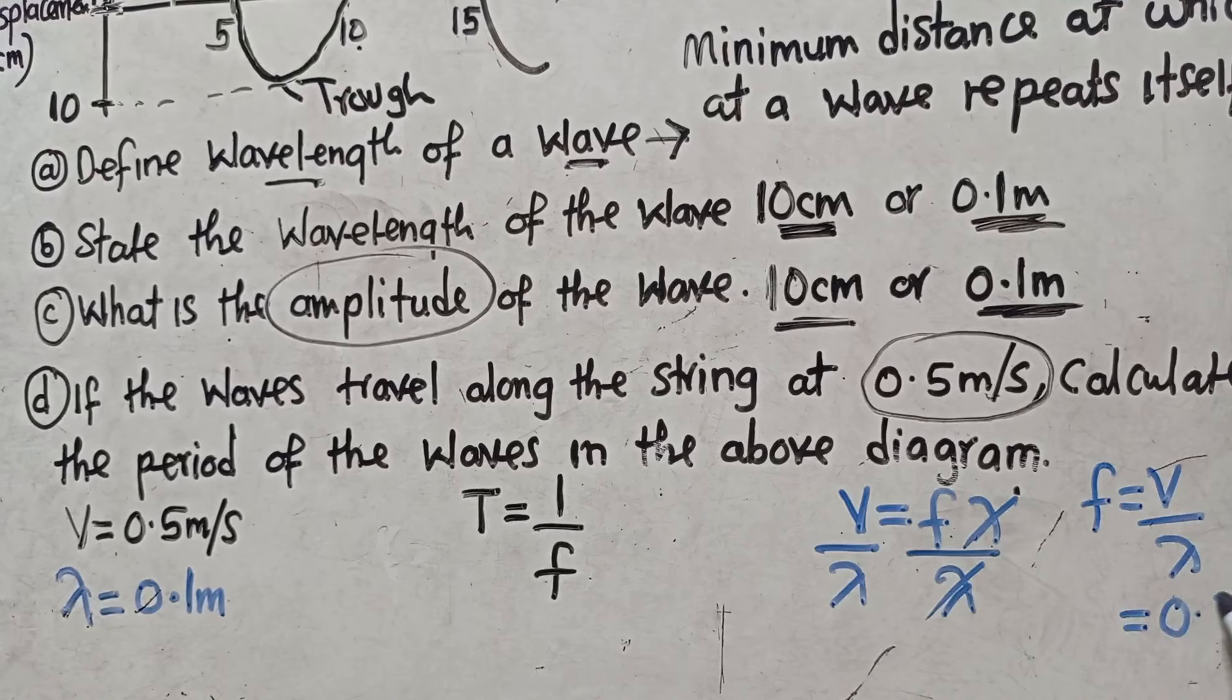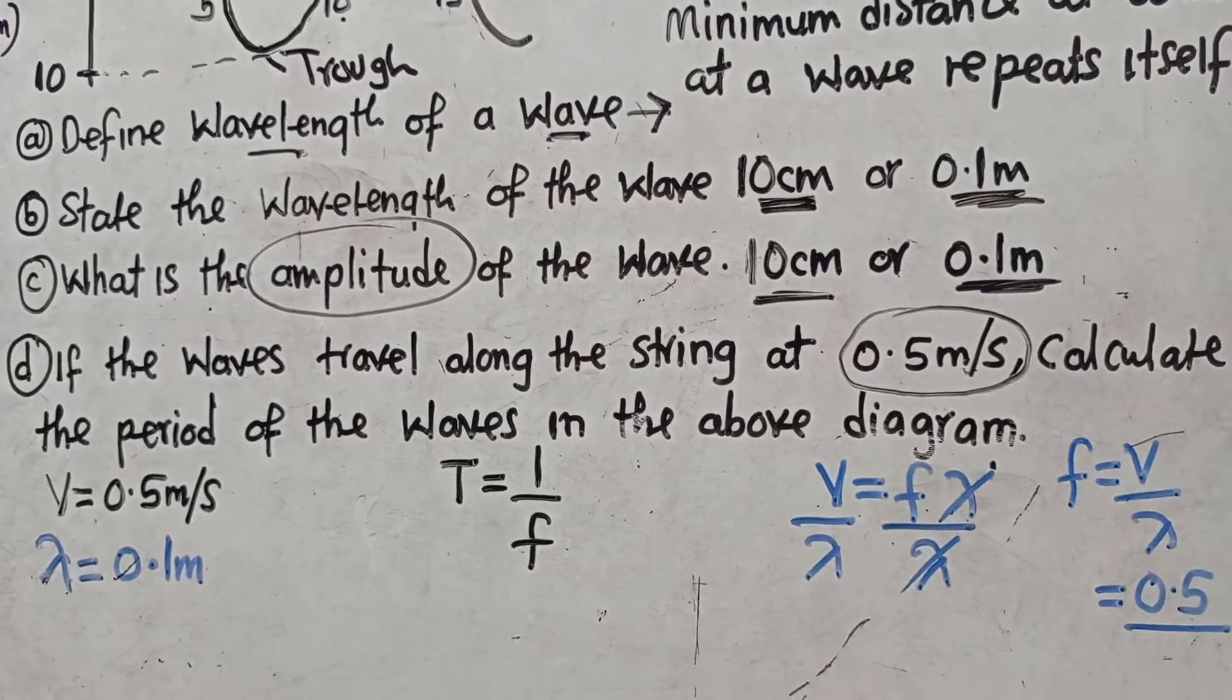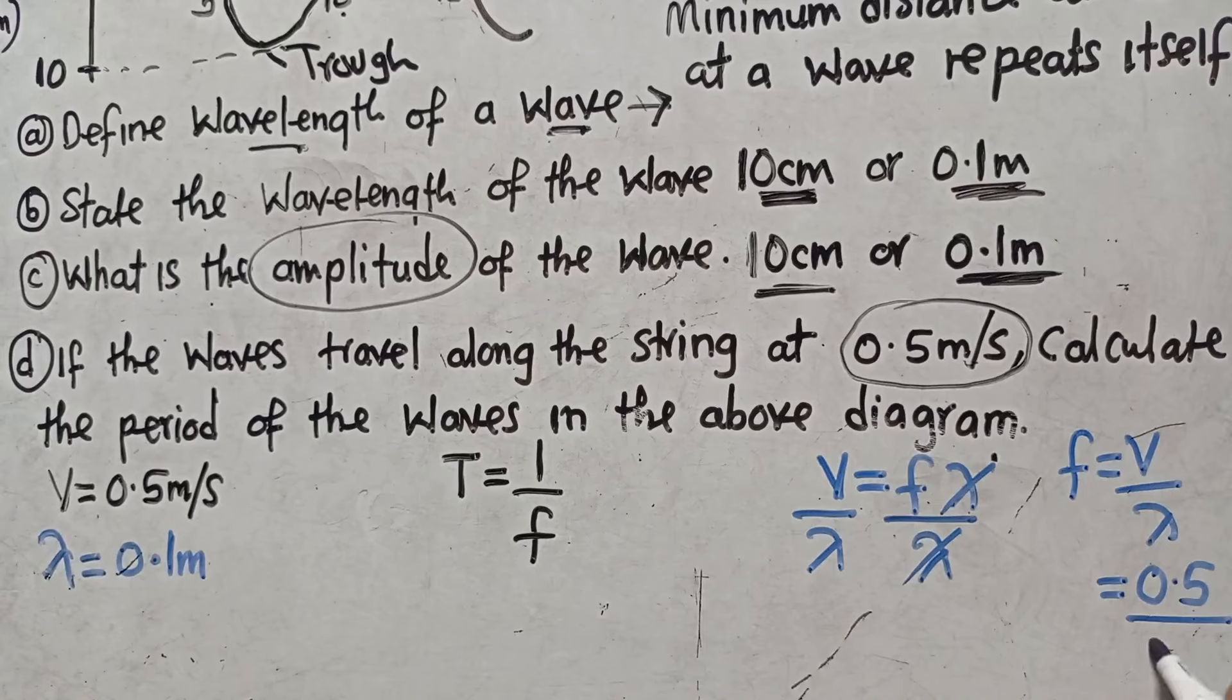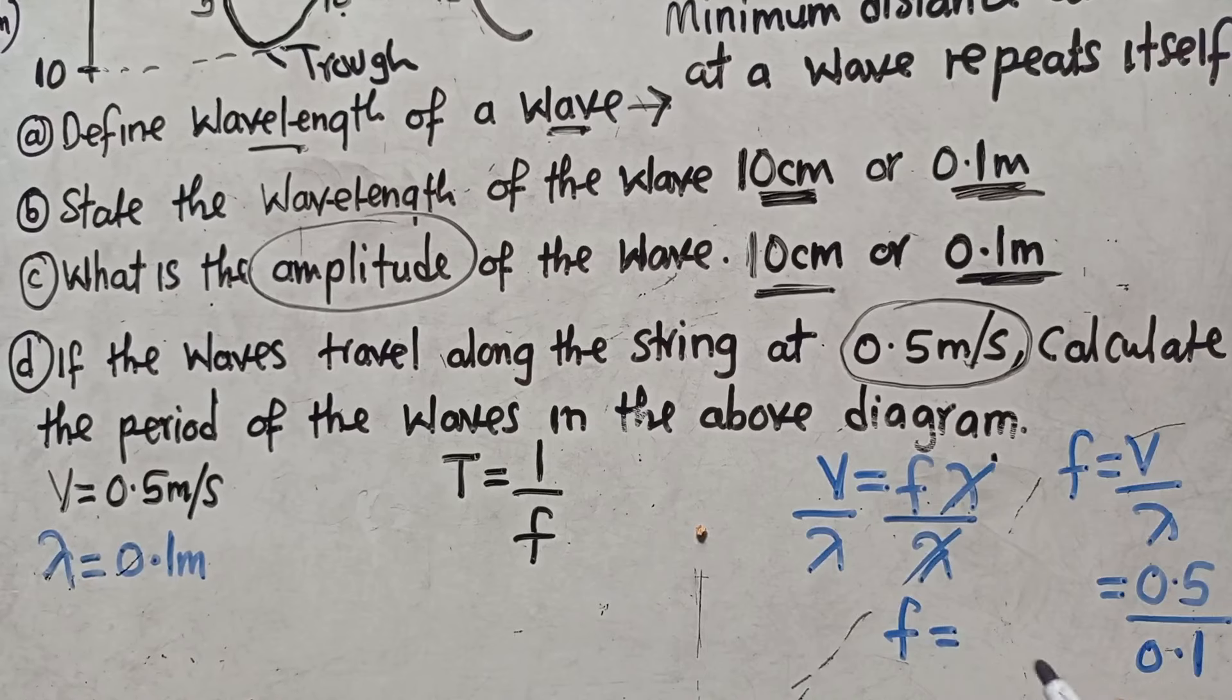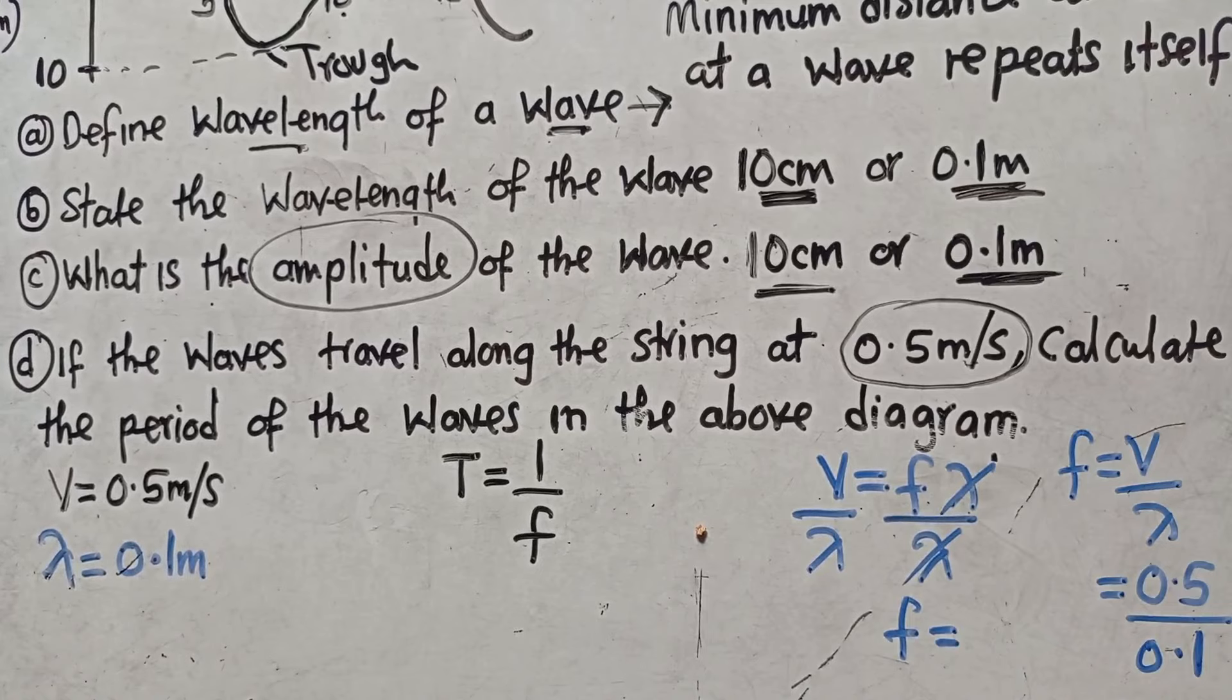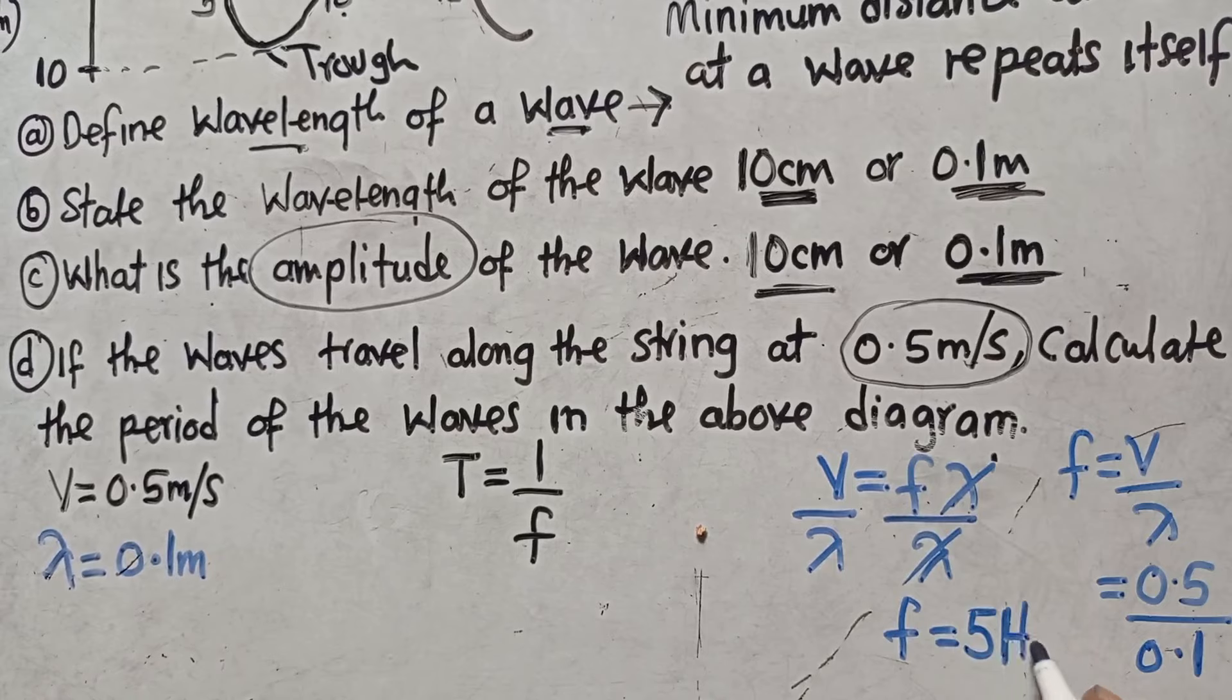We say frequency is equal to velocity over wavelength. This is equal to, what is velocity? 0.5 over what is wavelength? Wavelength, that is 0.1. We say okay what answer we are going to get there? So therefore frequency is now equal to, what is our frequency? Get our calculator, we divide 0.5 divide 0.1. What is the answer? The answer is 5. So it is 5, we are getting 5.